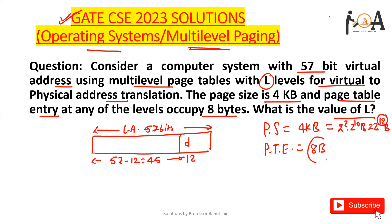The page table entry size is 8 bytes, which is 2³. So 3 bits are going to represent each page table entry.